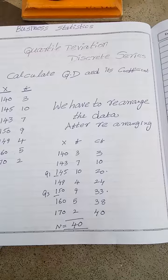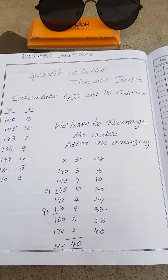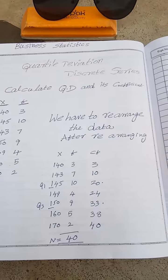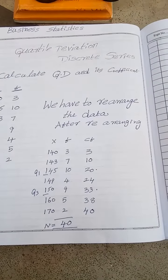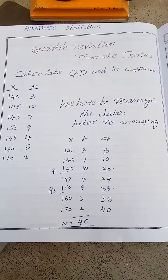Then my dear students, the formula demands cf, which means cumulative frequency. I went on adding one number to another number, like 3, 3 plus 7 equals 10, 10 plus 10 equals 20, likewise I went. n I got 40, my dear students.